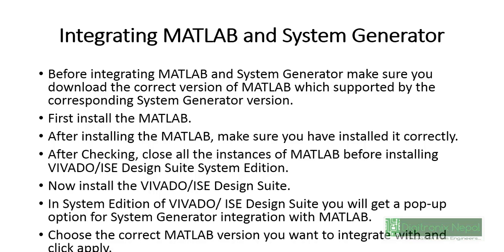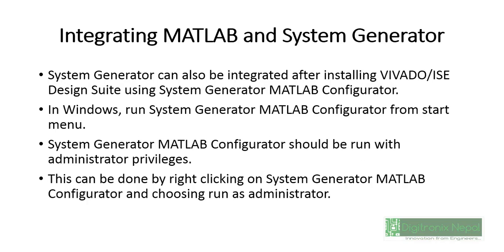Integrating MATLAB and System Generator is quite easy. First, install MATLAB. Then install Xilinx ISE or Vivado. If you have both already installed, you can go to the Xilinx System Generator configuration, which we will show in the next slide. In the All Programs section of your operating system, you can configure MATLAB and System Generator. After configuration, click on the System Generator icon in your Xilinx program list and it will open the Simulink platform for System Generator.